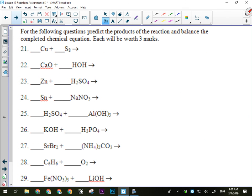Last set of 10, you're predicting the products. So you're predicting the products and balancing the reaction. So you get two marks for your products, and one mark for the balancing. So that's where you get your three marks each on that set of 10. Questions on that?